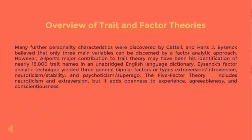Many contemporary theorists believe that five is a magic number, but earlier theorists such as Raymond B. Cattell found many more personality traits, and Hans J. Eysenck insisted that only three major factors can be discerned by a factor analytic approach. Gordon Allport's common-sense approach yielded five to ten traits central to each person's life, and his major contribution may have been his identification of nearly 18,000 trait names in an unabridged English language dictionary. These trait names were the basis for Cattell's original work.